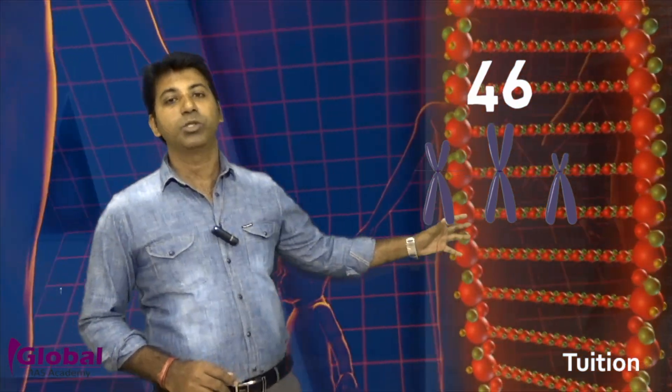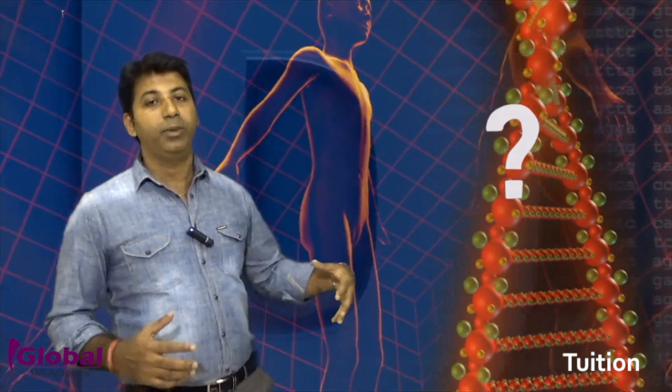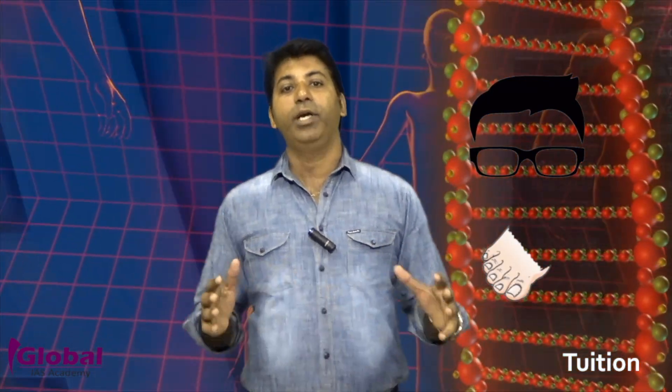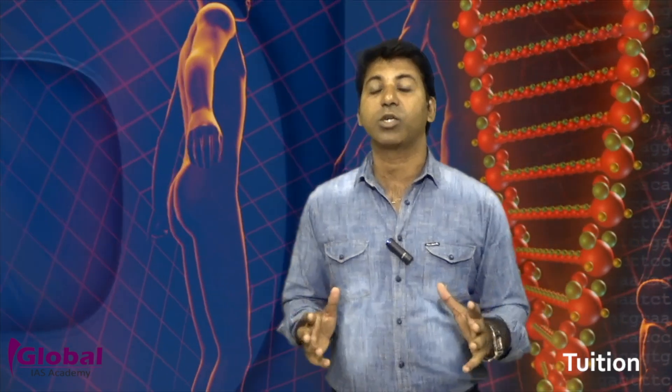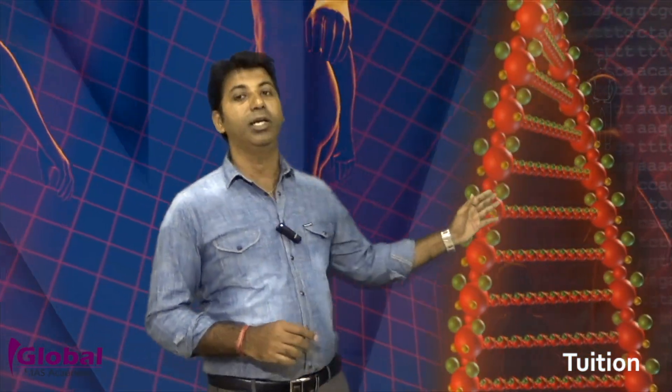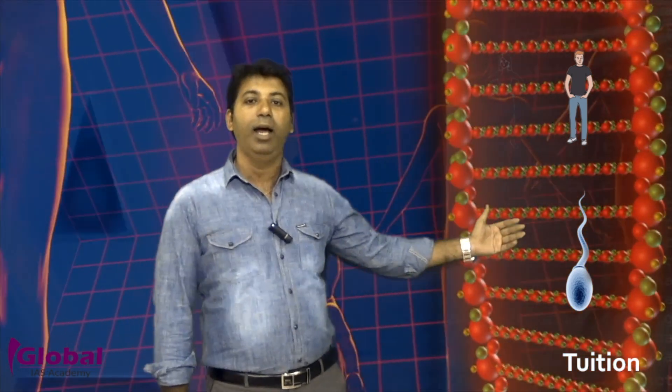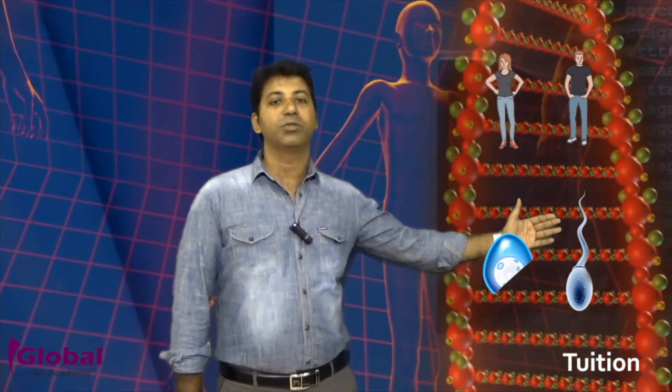These 46 chromosomes are present everywhere in our body — starting from your hairline all the way to the tip of your toes. In all the cells of the human body we have 46 chromosomes, except in our sexual cells, that is sperms for men and egg cells for women.